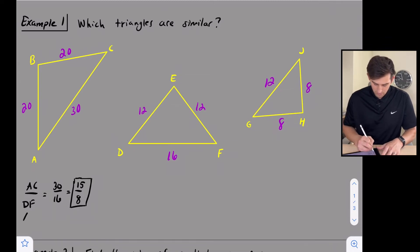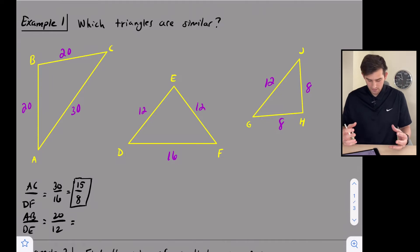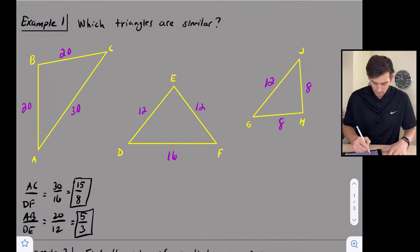Now let's compare AB over DE. So AB is 20, DE is 12. So now when we reduce that, we can divide both of those by 4 and we get 5 over 3. So now is 5 over 3 the same as 15 over 8? No, right? So we know this doesn't work.